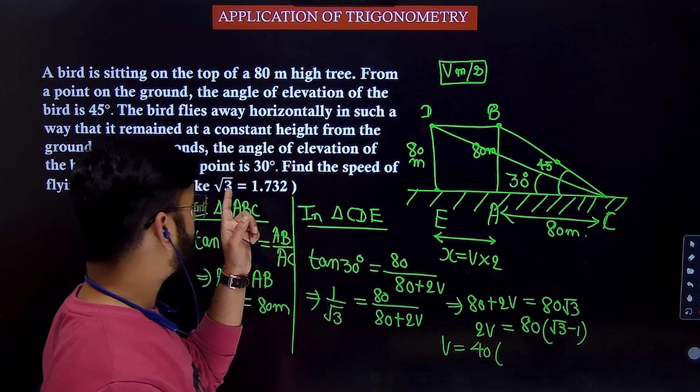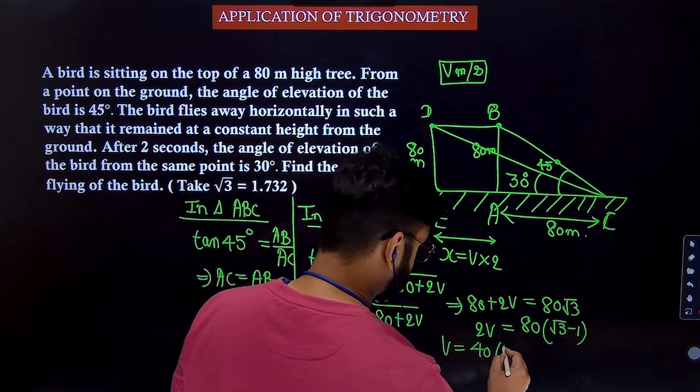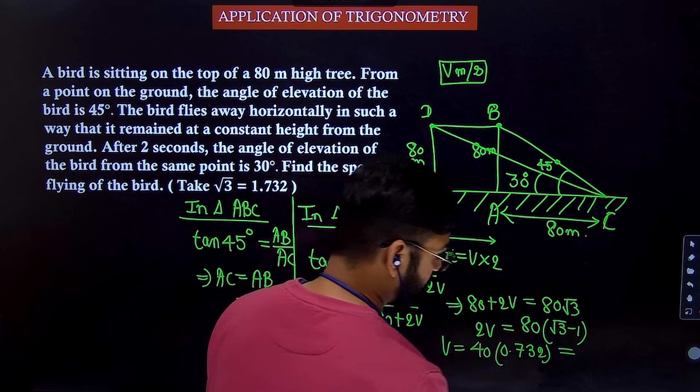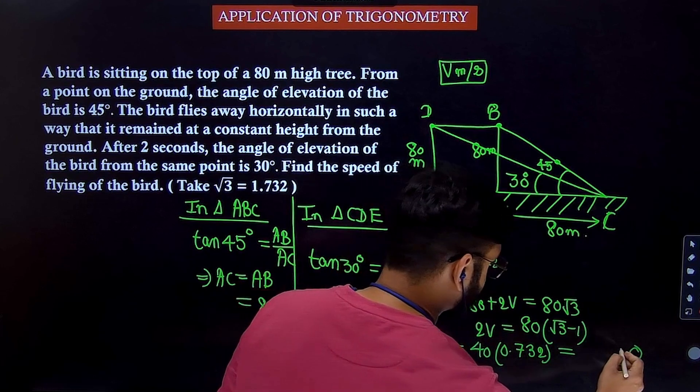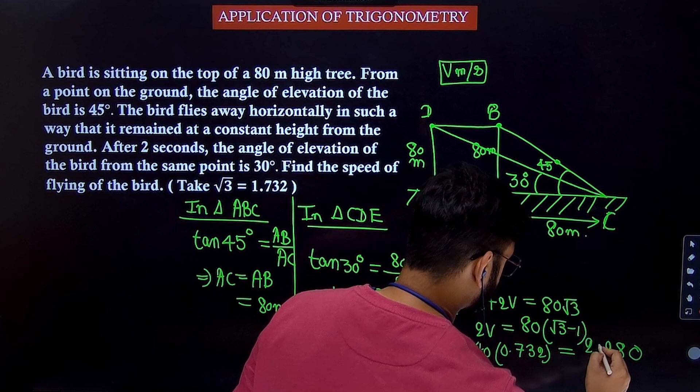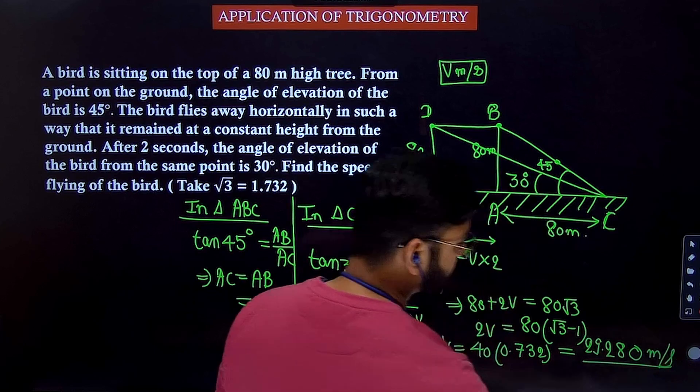What is root 3? It is given in the question 1.732. So 1.732 minus 1, 0.732. Let us multiply it. So put 0, 4 2s are 8, 4 3s are 12, 4 7s are 28, 29. So answer is 29.28 meter per second.